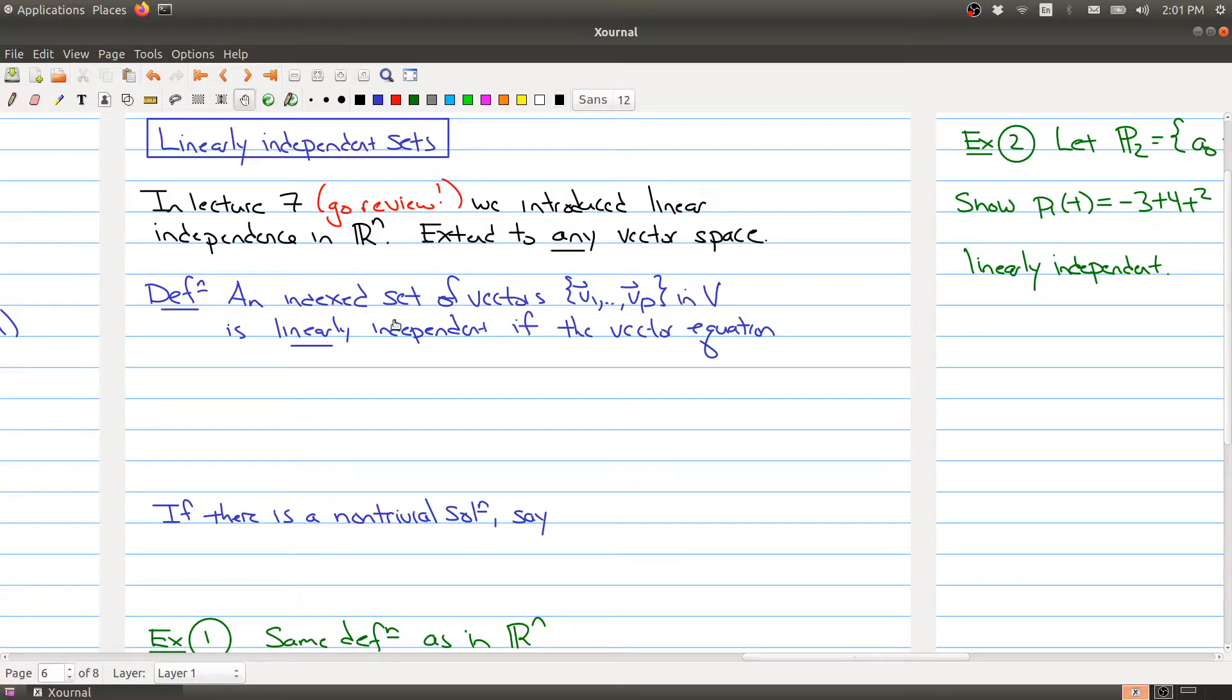And in fact, that's what the next definition does. You'll notice that the definition is almost word for word the same as in R^n, except now instead of taking vectors inside of R^n, we're taking vectors inside of our arbitrary vector space. So an indexed set of vectors V_1 through V_p in our vector space V is linearly independent if the vector equation C_1 times V_1 plus C_2V_2 up to C_pV_p equals 0 has only the trivial solution.